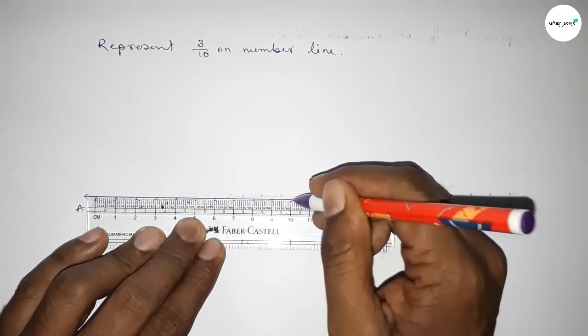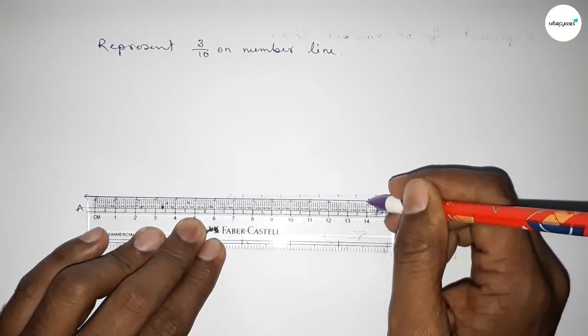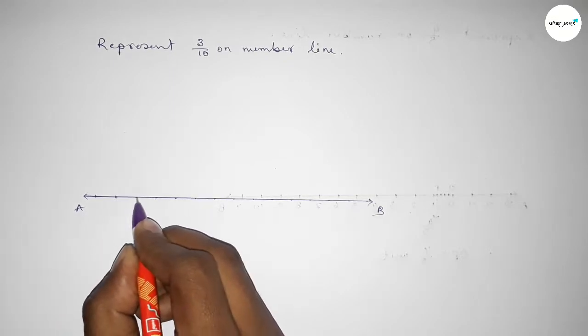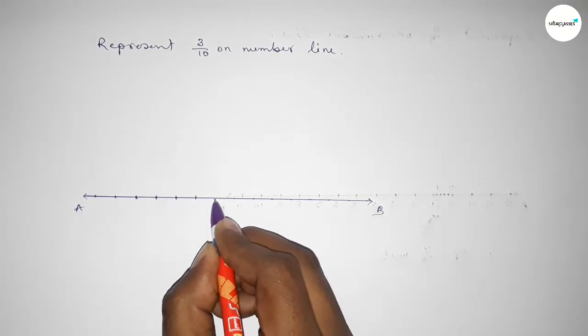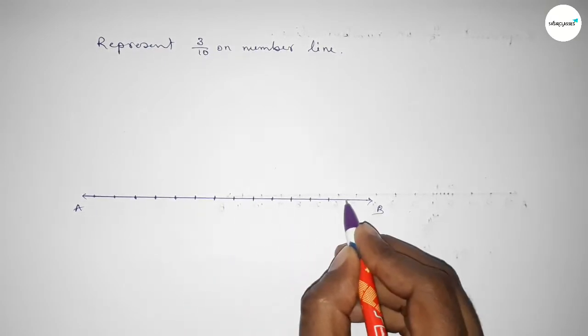Mark the numbers on the line by using a scale. We'll mark the numbers with different colors to understand perfectly.